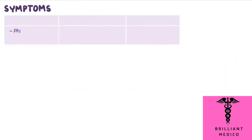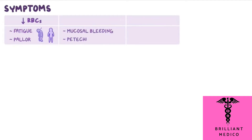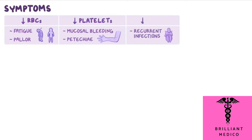Symptoms of aplastic anemia include fatigue, pallor on account of low red blood cell levels, mucosal bleeding or petechiae due to low platelet counts, and recurrent infections due to low white blood cell counts.